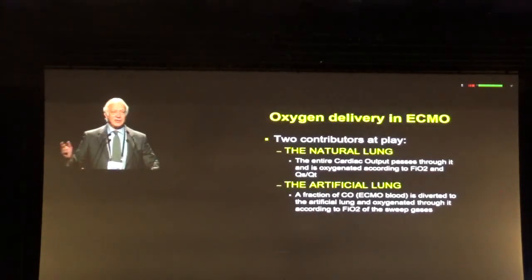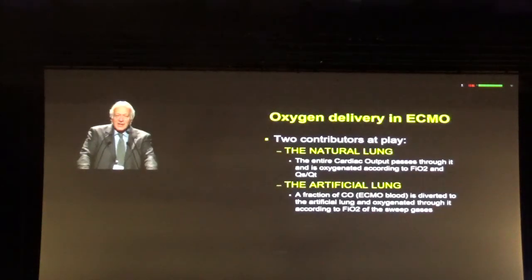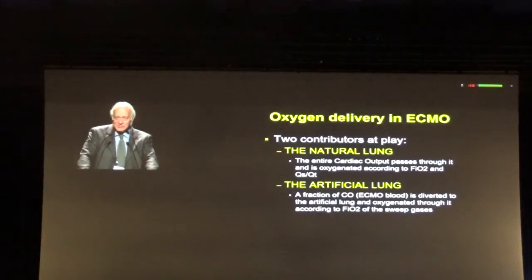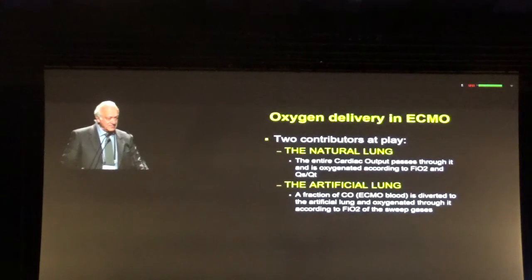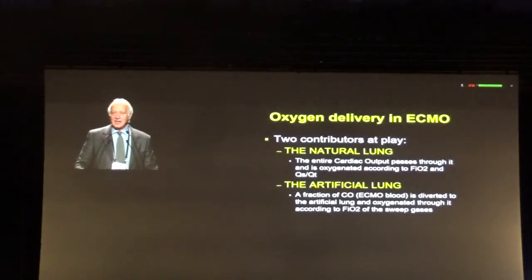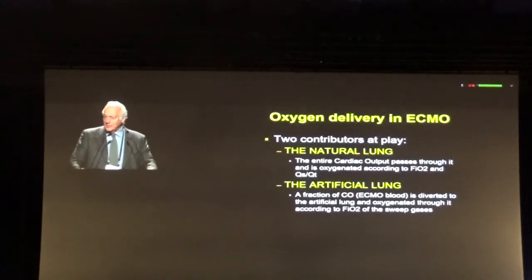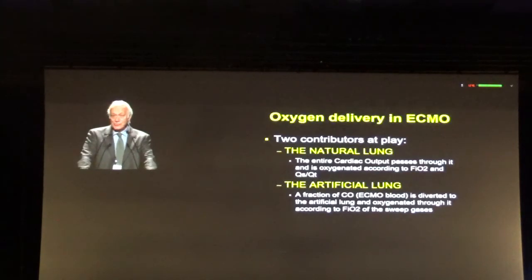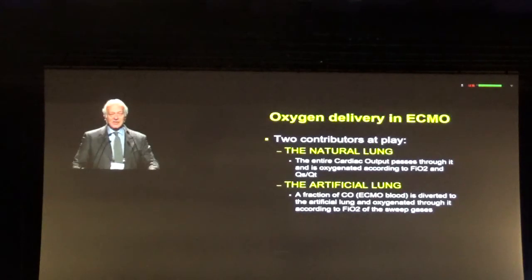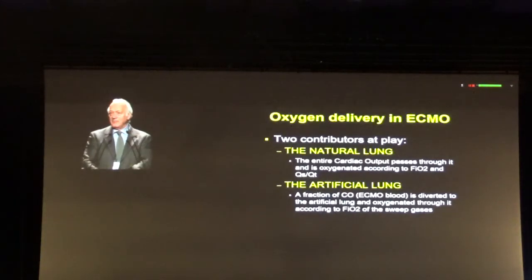In terms of oxygen delivery during ECMO, oxygen delivery is affected by two systems. One is the natural lung, and the other one is the artificial lung. Each one of those follows its own rules. Through the natural lung goes all of the cardiac output. The difference between the two is that the natural lung sees the entire cardiac output, while the artificial lung sees only a fraction of the cardiac output.